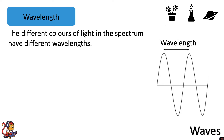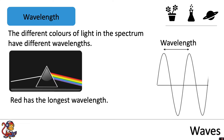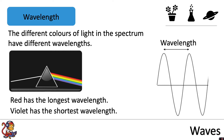The different colours of light in the spectrum have different wavelengths. Red has the longest wavelength and violet has the shortest wavelength. As white light hits the glass prism, these different wavelengths of light slow down by different amounts, and therefore as they come out the other side, that is why we see them in their separate colours.